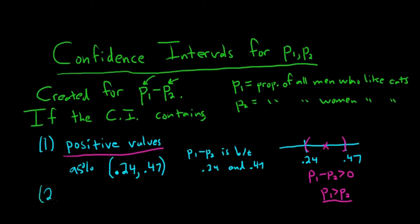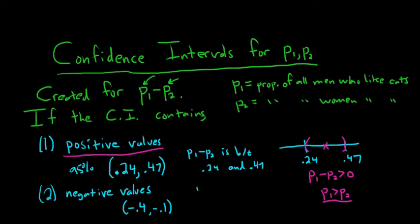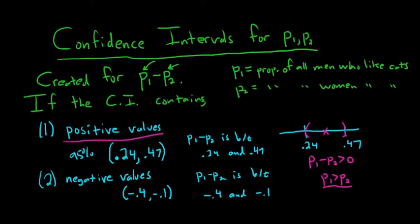Case two: you get only negative values. Say the answer you get is negative .4 to negative .1. That means P1 minus P2 is between negative .4 and negative .1 with 95% confidence.